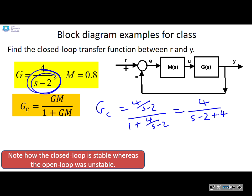However, look at the closed loop. The pole is now at minus 2. It's in the left half plane, so it's stable. So we've had a big change in behavior by closing the loop.